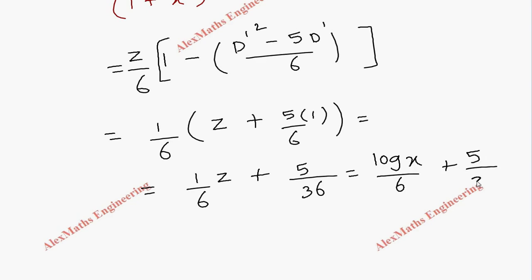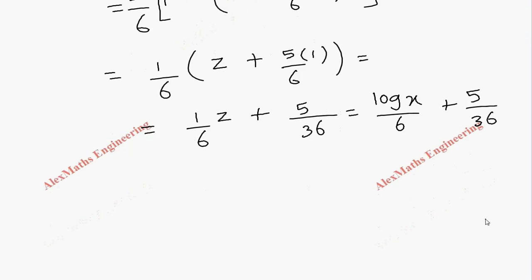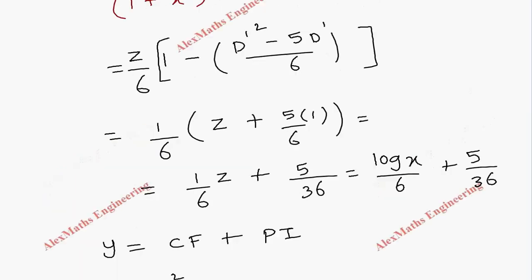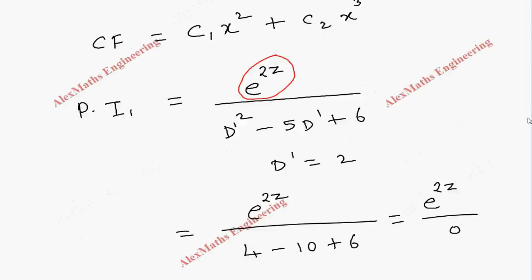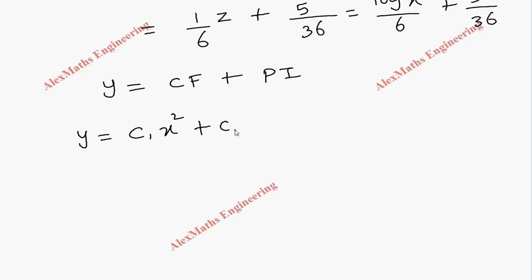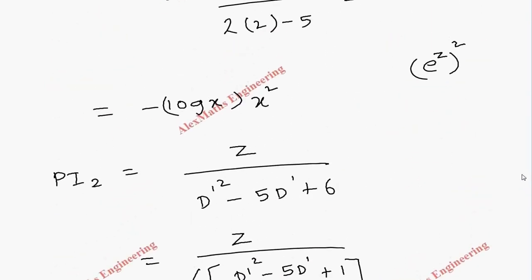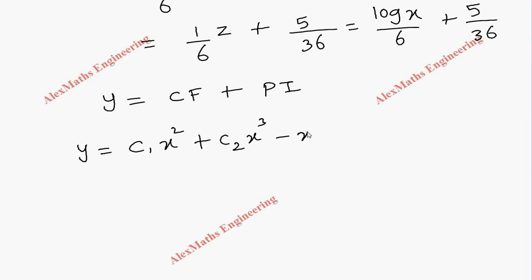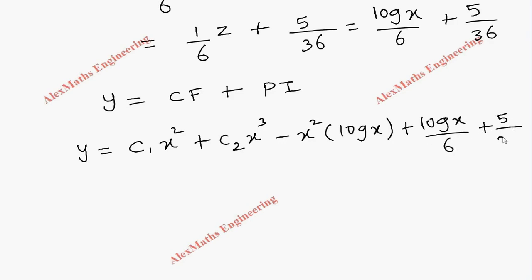Combining everything, the complete solution is y = CF + PI: y = c₁x² + c₂x³ − x² log x + log x/6 + 5/36.